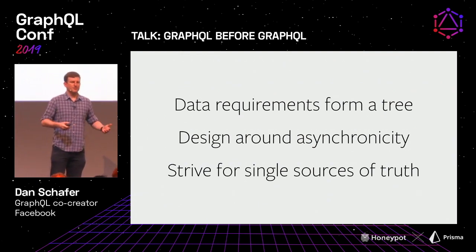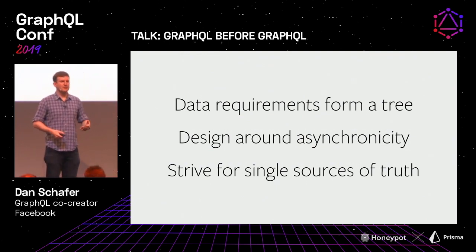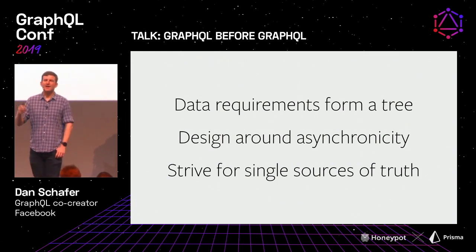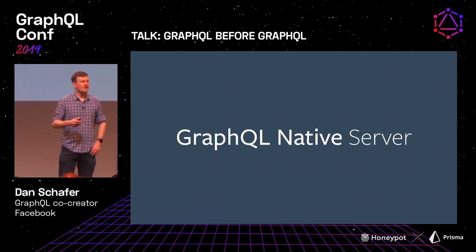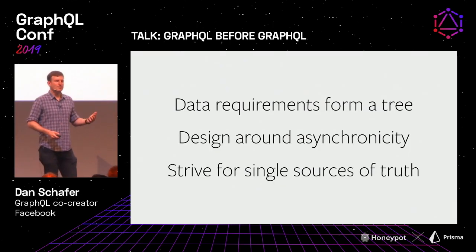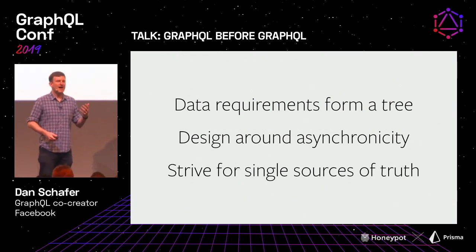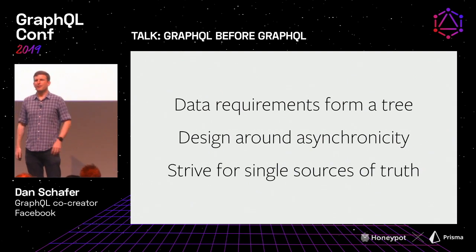The data requirements forming a tree is so tautological in GraphQL — the input query is a tree. Designing around asynchronicity: in the executor, everything could be asynchronous and we have to handle that. The single source of truth: resolvers allow you to cleanly map so that every time you're fetching a user's name, it goes through one method. Last year Nick Schrock talked about GraphQL native servers and the need to design servers around GraphQL. These three principles define, in my mind, what a GraphQL native server would look like. GraphQL is designed to work with a server that thinks like this.